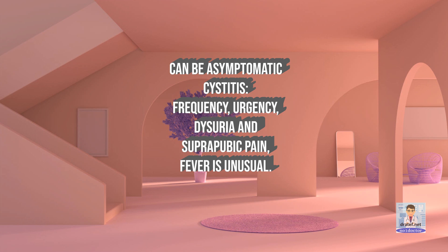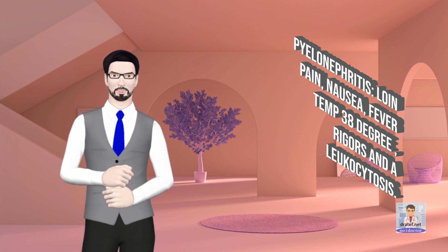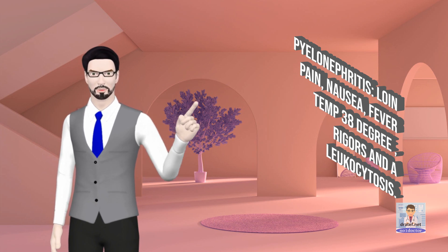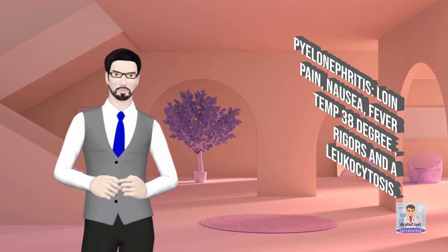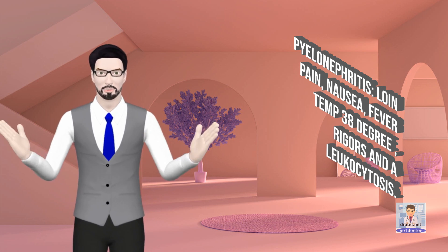Symptoms can be asymptomatic. Cystitis presents with frequency, urgency, dysuria, and suprapubic pain; fever is unusual. Pyelonephritis presents with loin pain, nausea, fever (temp ≥38°C), rigors, and leukocytosis.